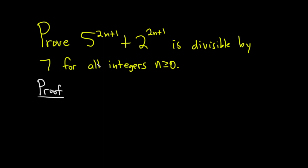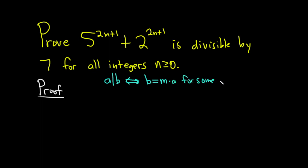Before I start the proof, let me briefly refresh your memory on what this means. We say that a divides b — written with a vertical bar — or b is divisible by a. This means b is a multiple of a. So b equals some integer m times a, for some integer m. In other words, b is divisible by a is the same thing as saying b is a multiple of a.